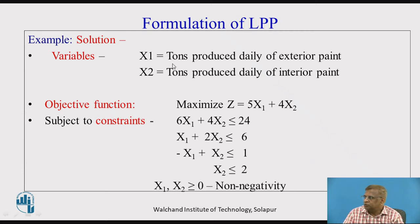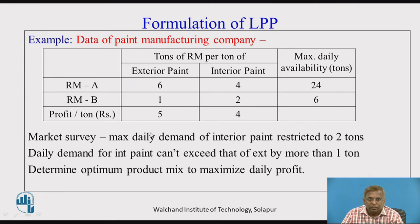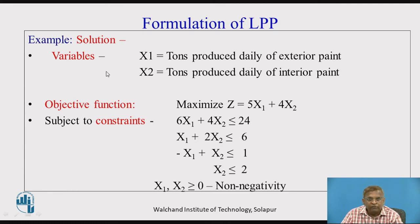x1 is the tons produced daily of exterior paint. From the last line of the question — determine optimum product mix to maximize daily profit — day is the time dimension, which is very important to understand. These are the two types of paints, so exterior paint is denoted as x1 produced per day, and x2 as tons produced daily of interior paint. Defining variables is a very important stage. Once we do this, we can go ahead with the objective function.